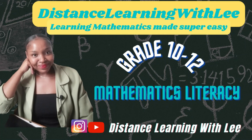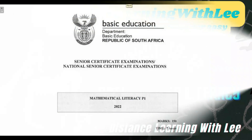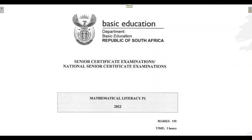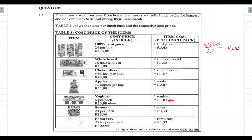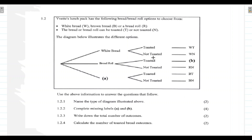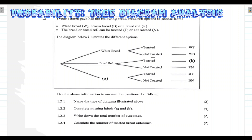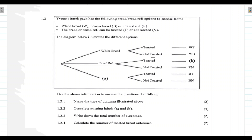Welcome to Distance Learning with Lee, where I make learning mathematics super easy. In today's video tutorial we are going through the Grade 12 Mathematics Literacy Paper 1 written in June 2022. We are tackling Question 1.2, which deals with probability, and we'll be working with a tree diagram to answer the questions.